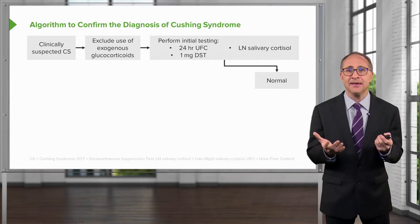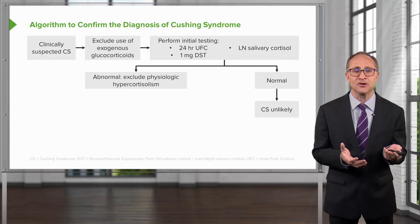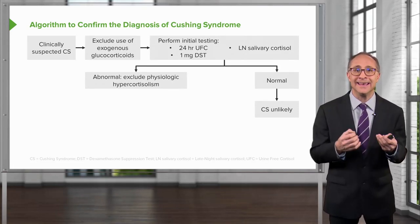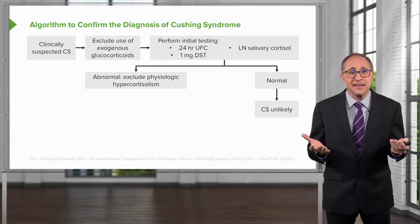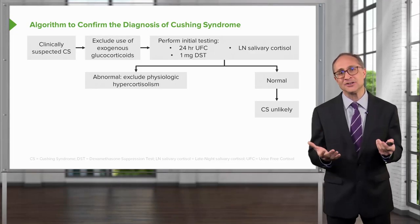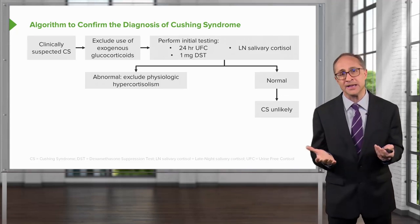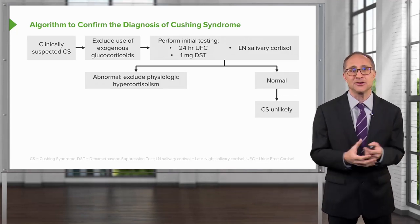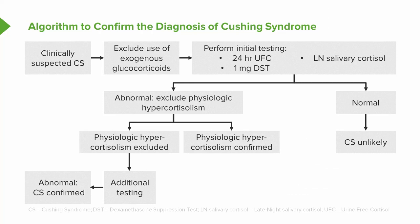Moving down the algorithm, if these tests are normal, Cushing syndrome is unlikely. On the left side of the algorithm, if these tests are abnormal, the next step is to exclude physiologic hypercortisolism — that's essentially increases in cortisol caused by psychological stress or severe illness, which can certainly muddy the picture in the diagnosis of Cushing syndrome. Once you have excluded those entities, you then move down to additional testing, which can include imaging. If the imaging is positive, you have confirmed your diagnosis of Cushing syndrome.